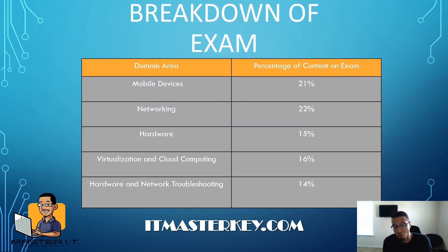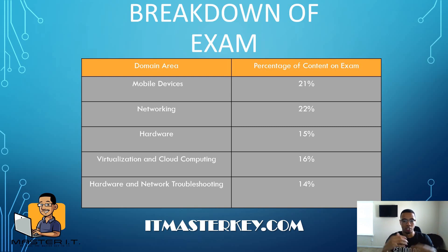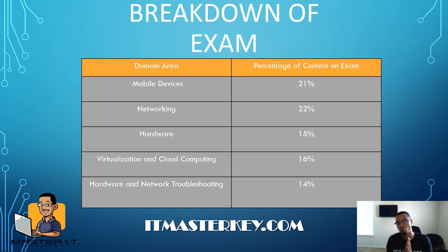These are the areas focused on in the actual exam: mobile devices, networking, hardware, virtualization and cloud computing, and hardware and network troubleshooting. Virtualization and cloud computing is one of the main differences between this exam and the 900 series — this exam focuses more on that. These are the five domains you need to focus on to be successful on the test.